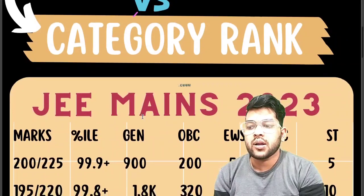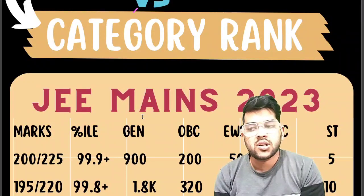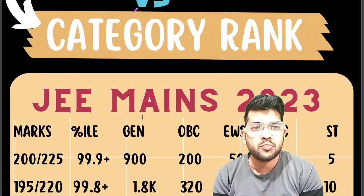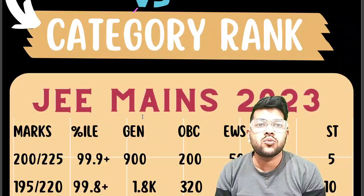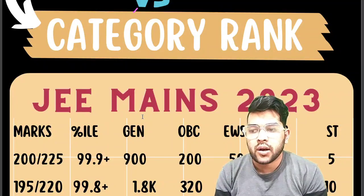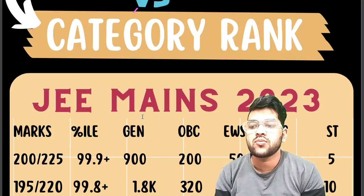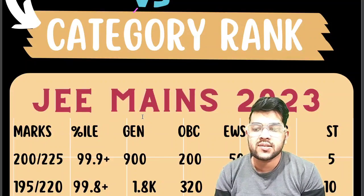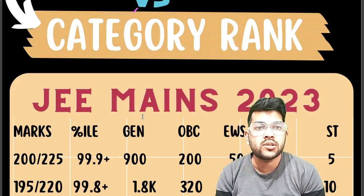For 99.8+ percentile, your marks would be 195 for the first attempt and 220 for the second attempt. This is for the April attempt as of now; if there is any issue, that attempt may shift to May or June depending on the situation. The corresponding ranks are: General 1,800, OBC 320, EWS 120, SC under 15, ST under 10 — these are category ranks.